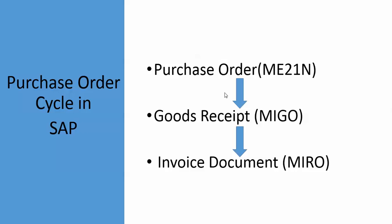The vendor dispatches material to our plant, which is mentioned in our purchase order. Our plant personnel, after checking the quality and quantity of the material mentioned in the purchase order, create a goods receipt in transaction code MIGO. Goods receipt is a confirmation that whatever material and quantity we mentioned in the purchase order has been received in our plant.